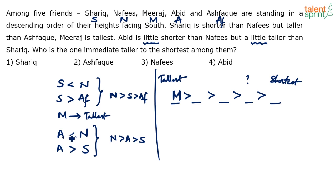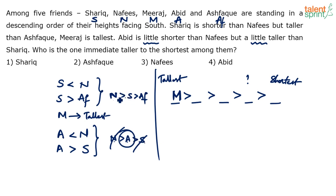Now try to understand. Abid is shorter than Nafis and taller than Sharik. We already have the sequence N greater than S greater than AF. Out of N, A, and S, we already have N and S placed. We just need to adjust A. The data says A is between N and S, so it fits as N greater than A greater than S greater than AF. Both sequences are validated: N greater than A greater than S, and N greater than S greater than AF — giving us N greater than A greater than S greater than AF.